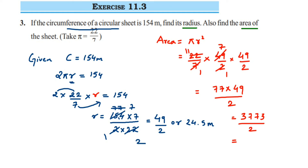Since 3773 is odd it won't cancel with 2, so we divide directly. 3773 ÷ 2: 3 doesn't go, so 2 × 1 = 2 with remainder 1, making 17; 2 × 8 = 16 with remainder 1, making 17 again; 2 × 8 = 16 with remainder 1, making 13; 2 × 6 = 12 with remainder 1. Put decimal and bring down 0: 10 ÷ 2 = 5. So the area is 1886.5.